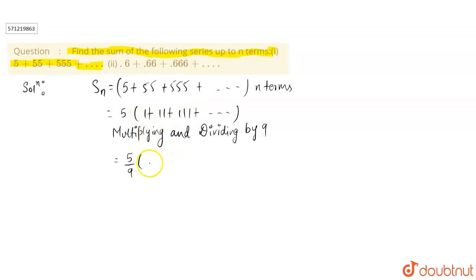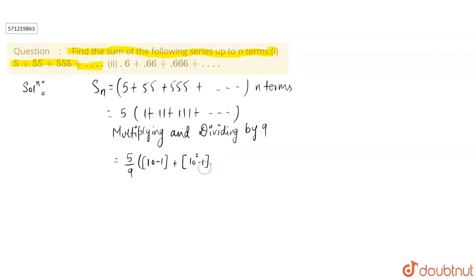So again, 9 can be written as 10 minus 1. If you multiply 9 it will be 99. 99 can be written as 10 squared minus 1. Similarly, 999 can be written as 10 cubed minus 1, and so on.